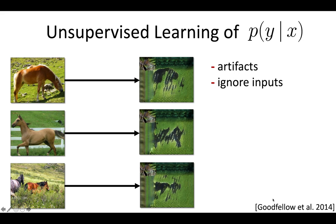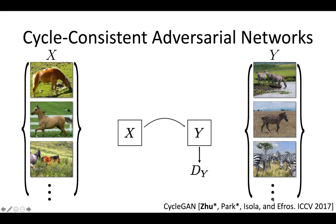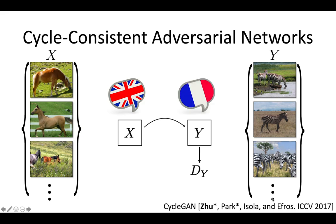Why is our model not working? Because given enough capacity, a network can turn any input image into any kind of zebra. Therefore, we need another constraint. We propose to use a cycle consistency constraint — if we translate a sentence from English to French, we should arrive back at the original sentence if we translate back from French to English.